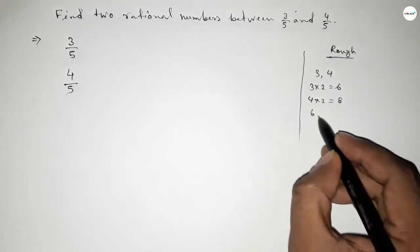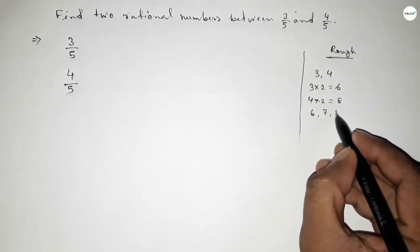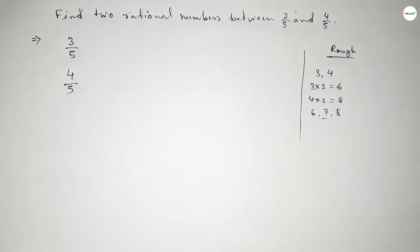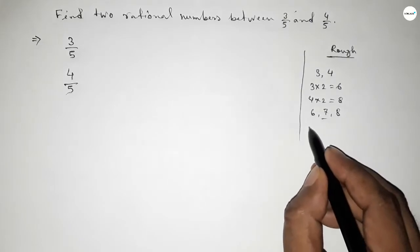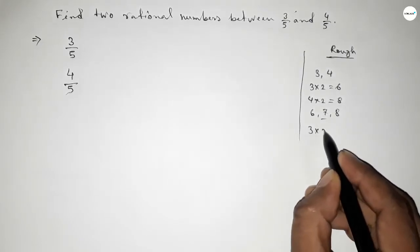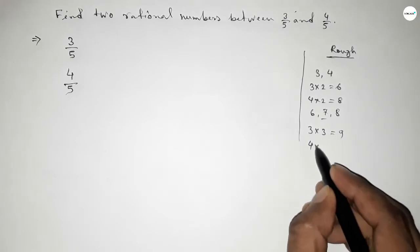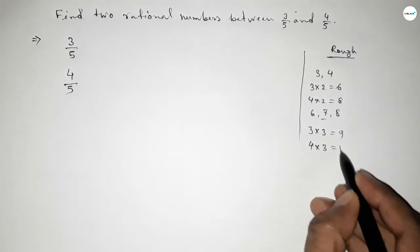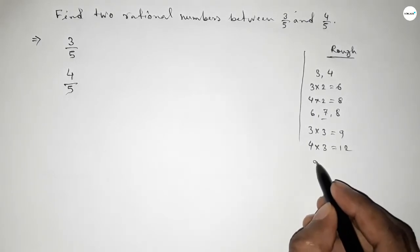...by 2, we get 6 and 8. Between 6 and 8 we can get one natural number, but we need two natural numbers. So if you multiply 3 and 4 by 3, we get 9 and 12.